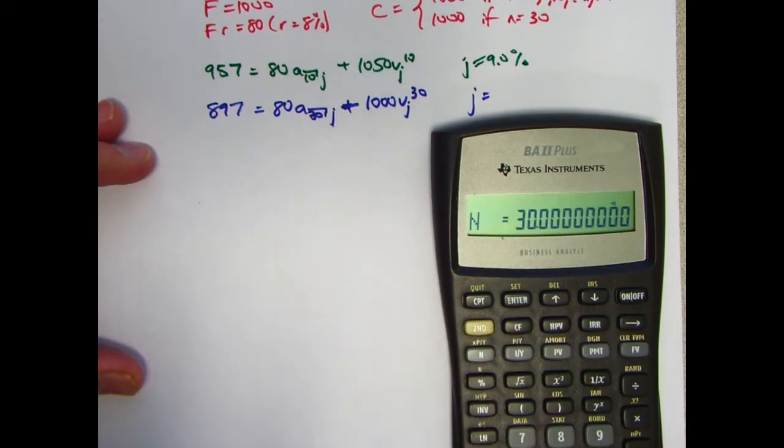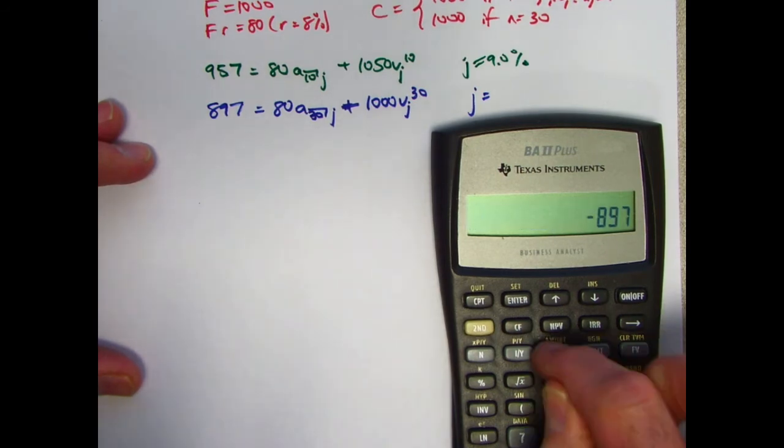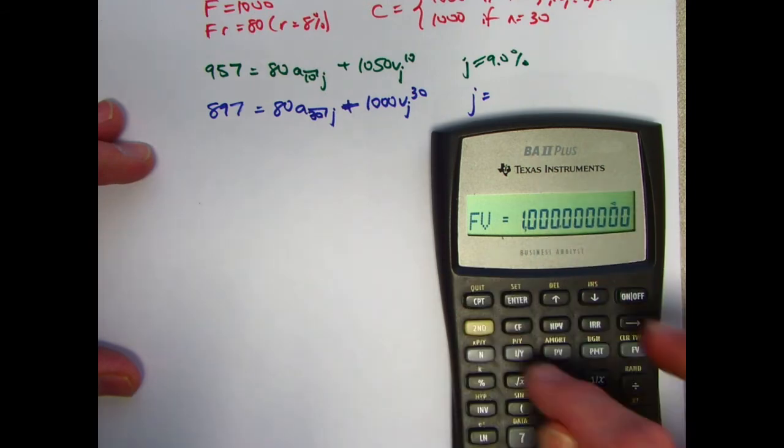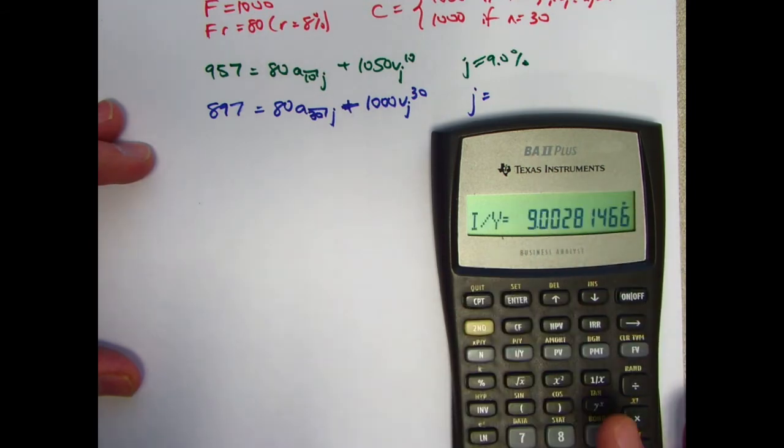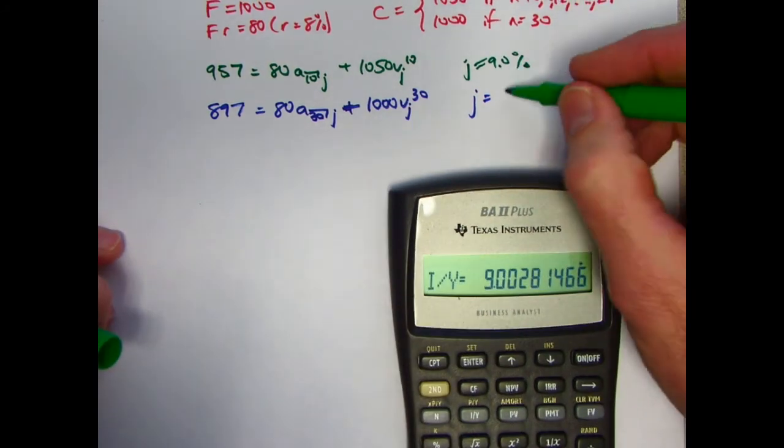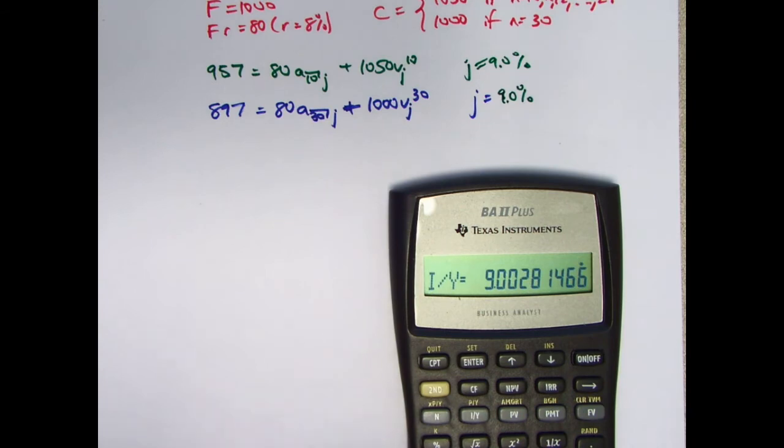So N is now 30. 897 negative is PV. 80 is PMT. 1,000 is FV instead of 1,050. Compute interest rate per year. Don't double it. Yeah, we are coming out at about 9% again. Close enough to count these as being effectively the same here for the purposes of this problem.